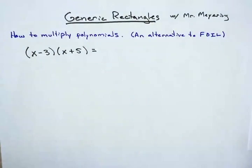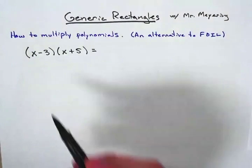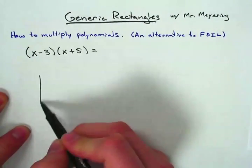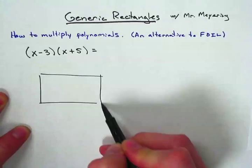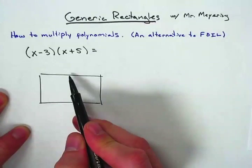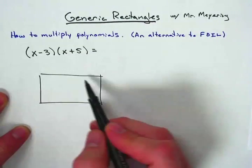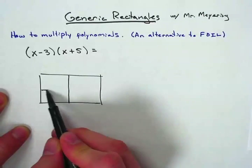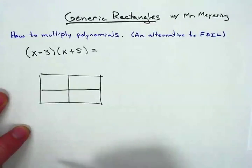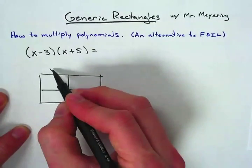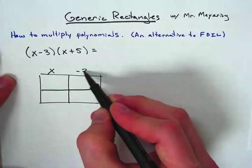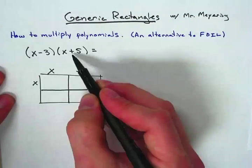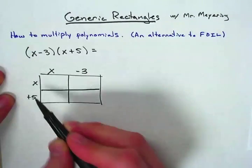But we're going to do it with a rectangle, which gives a nice visual example of how that multiplication works. All you do is make a big rectangle and split the top part into how many parts there are in your first binomial, the up and down part with how many terms there are here. There's two in each of those, so there's two parts, and you just label those with that length: x and minus 3. Here's an x and a positive 5.